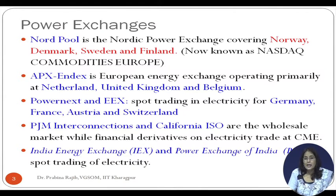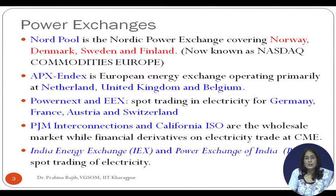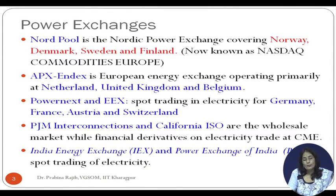PowerNext and EEX are exchanges for spot trading of electricity leading to physical delivery — they do not have derivative contracts traded. These two exchanges ensure that electricity gets delivered in Germany, France, Austria, and Switzerland. PGM Interconnections and California ISO are wholesale markets leading to delivery of electricity, while the Chicago Mercantile Exchange is where financial derivative contracts on electricity are traded. In India we have two exchanges: India Energy Exchange (IEX) and Power Exchange India Limited (PXIL), used for spot trading of electricity.